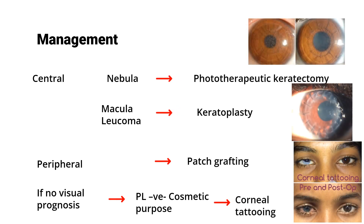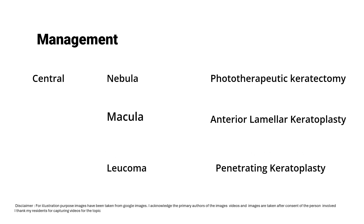To summarize: nebular grade opacity — phototherapeutic keratectomy. Macular or leucomatous grade opacity — keratoplasty. For a PL-negative eye, corneal tattooing for cosmetic purposes. Regarding the type of keratoplasty: for macular grade involving only half the cornea, perform anterior lamellar keratoplasty, not full thickness. For leucomatous grade, perform penetrating keratoplasty. These are the most common questions asked in a case of corneal opacity, and you should also know a little about keratoplasty for follow-up questions.